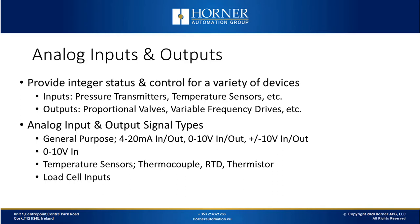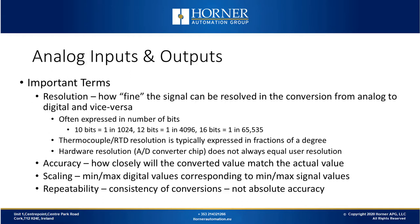There are also load cell or strain gauge type inputs that can be used with some of our IO products, although we don't at this stage have a dedicated load cell or strain gauge input. There are important terms we need to know with analog. Resolution is how finely we can resolve the signal on an input as we convert it from analog to digital and vice versa. It's often expressed in terms of a number of bits — examples are 10-bit resolution, which is 1 in 1024, all the way up to 16 bits of resolution, which is about 1 in 65,000.